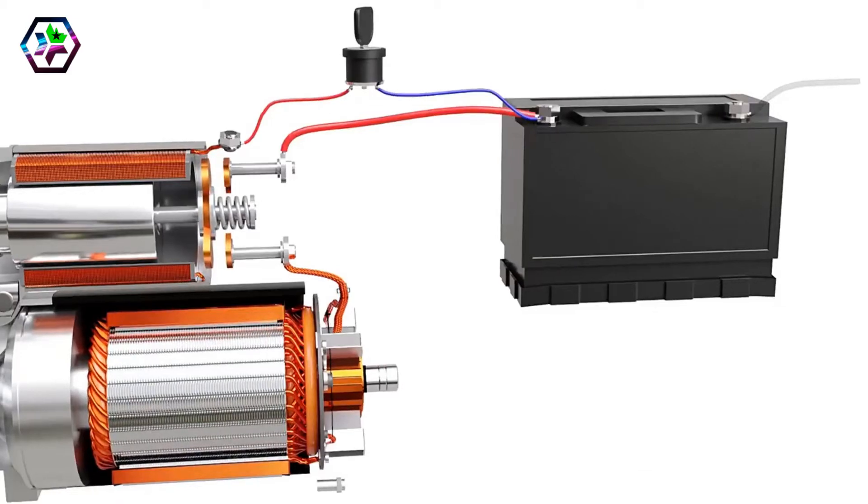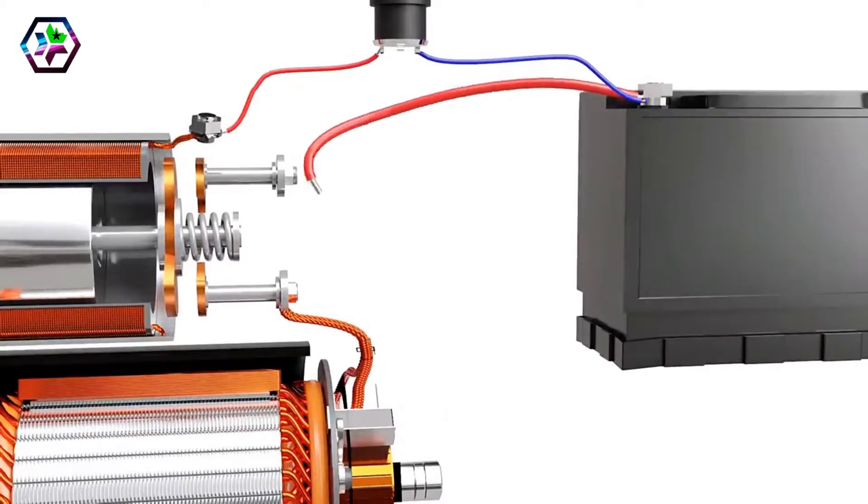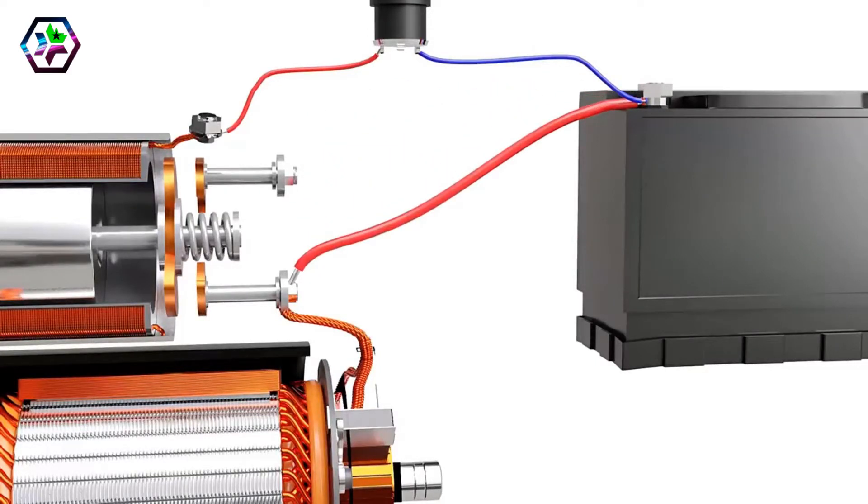We may wonder why the solenoid and the contactor are used instead of directly connecting the battery to the motor and reducing the complexity. The reason behind not using this circuit is the high current demand of the motor. The motor is considerably powerful and demands heavy current for operation. To handle this current, the ignition switch needs to be unusually large. It also requires very thick wires running from the battery to the switch and then to the motor, which is technically inconvenient. This is why solenoid is used, which demands lower current for being energized.